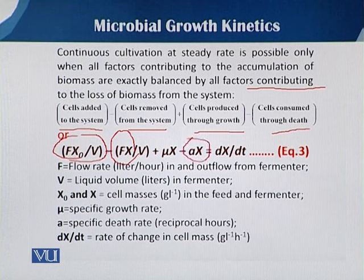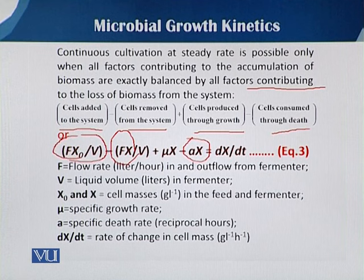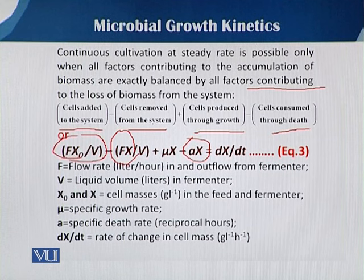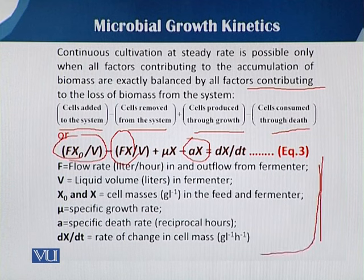The term A·x refers to the death of cells during fermentation. Some cells reach their last stage, which we call the death stage, and sometimes cells die due to toxic secretions. So this equation, called equation 3, covers four situations: biomass added as inoculum, actual biomass concentration, specific growth rate, and death rate — all inputs inside the fermentation vessel.